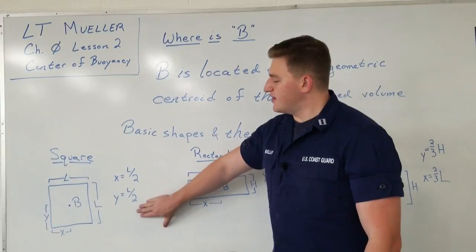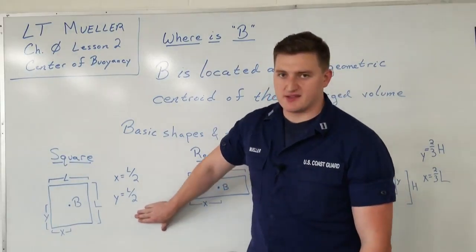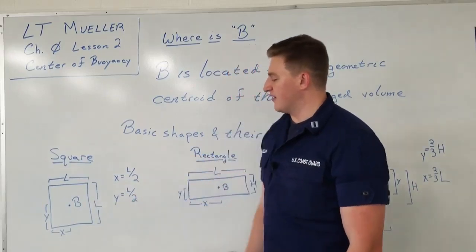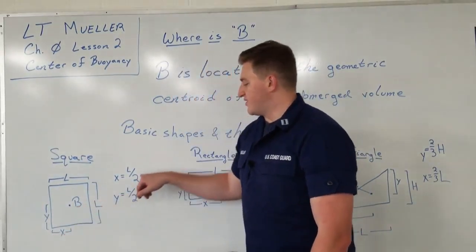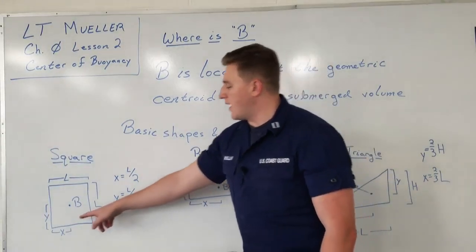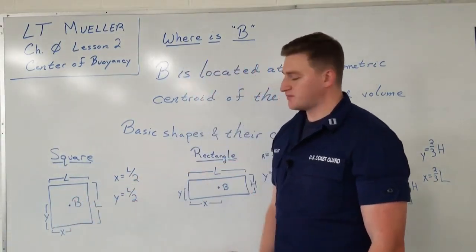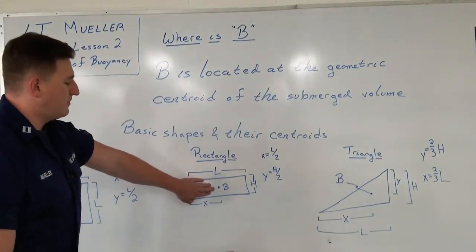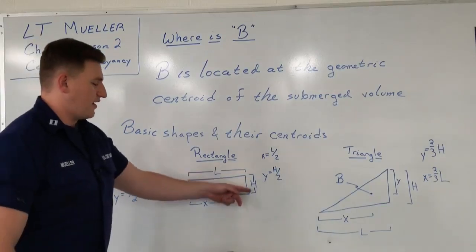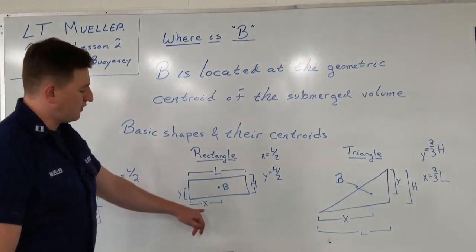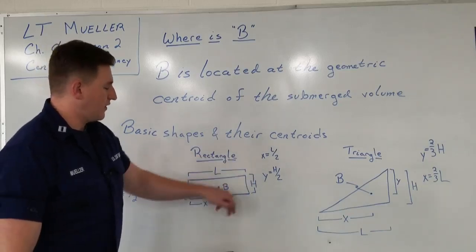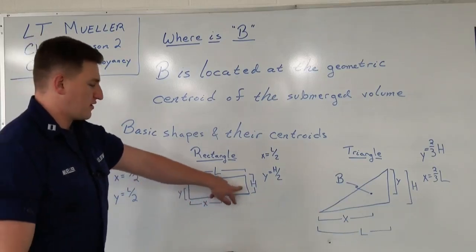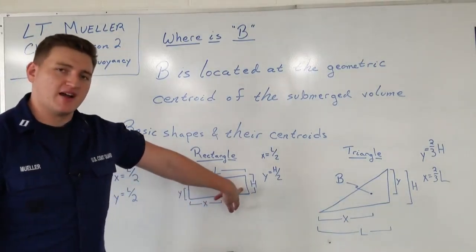We're going to start with the square. The centroid of a square is at its exact center. With each side of length L, the x-coordinate of the centroid is L over 2, and y measured from the bottom left is also L over 2. Moving on to the rectangle — similar to the square, it's at the exact middle, but the length and height are different. The x-coordinate is L over 2, defining L as the long side, and y is h over 2, h being the height of the rectangle.